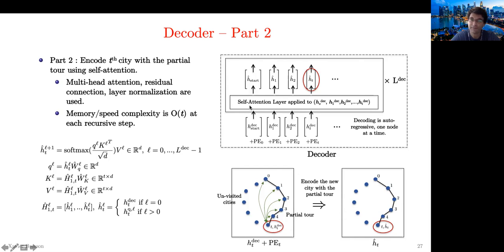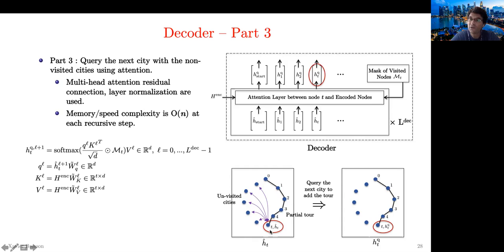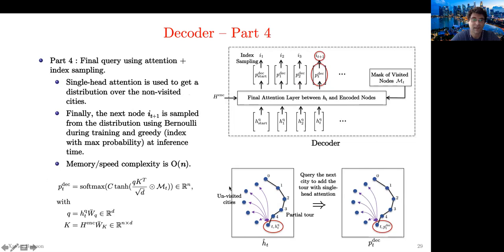Step 3: with the query, we ask which city is next by using a cross-attention layer between the query and the unvisited cities. Step 4: instead of multi-head attention, we use a single-head attention because we are selecting only one next city, giving a probability distribution over next cities. We sample this distribution using Bernoulli during training and greedy during inference.